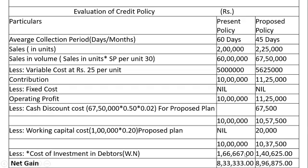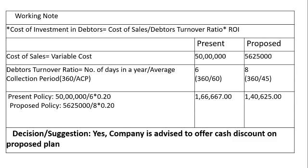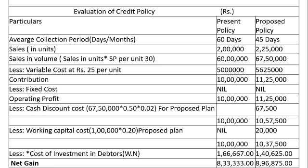After deducting the cost of investment in debtors, the net gain is Rs. 8,33,333 for the present policy and Rs. 8,96,875 for the proposed policy. Comparing the two, the net gain is higher under the proposed policy. Therefore, we conclude that Varun company is advised to offer the cash discount under the proposed policy, because the net gain is greater than under the present policy.